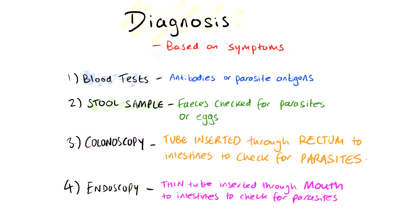An endoscopy is where a thin tube is inserted through the mouth into the intestines to check for any parasites. A colonoscopy is an alternative — this is where a tube is inserted through the rectum into the intestines in order to locate parasites.